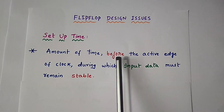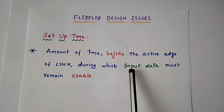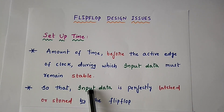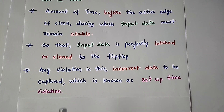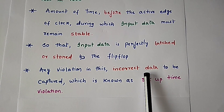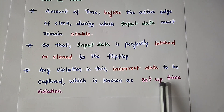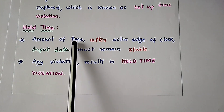Setup time is the amount of time before the active edge of the clock during which the input signal must remain stable so that input data is successfully stored. If the input is not constant during setup time, the flip-flop stores incorrect data — this condition is called a setup time violation.